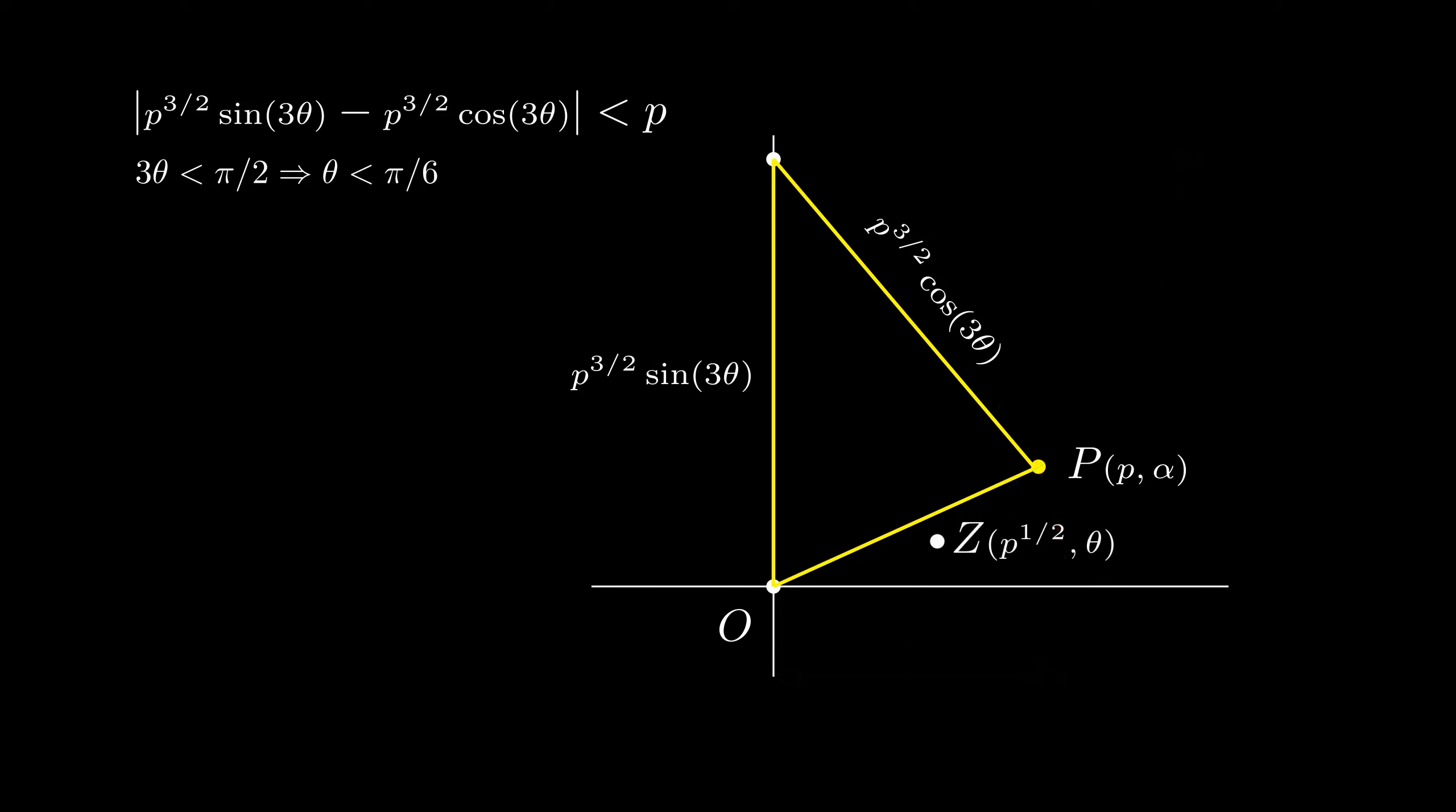We are also given that the real and imaginary parts of z are integers. Let's call them m and n respectively. Since the modulus of z is square root of p, we have sum of squares of the sides is equal to p. Note that m and n must be relatively prime, otherwise their common factor could divide p, which is not possible as it is a prime number.